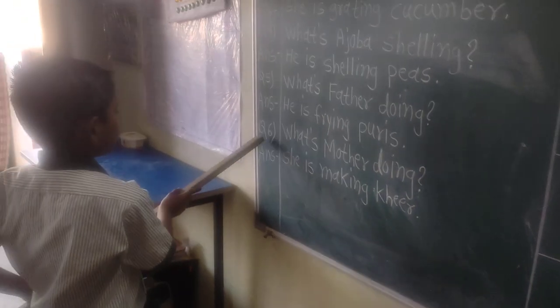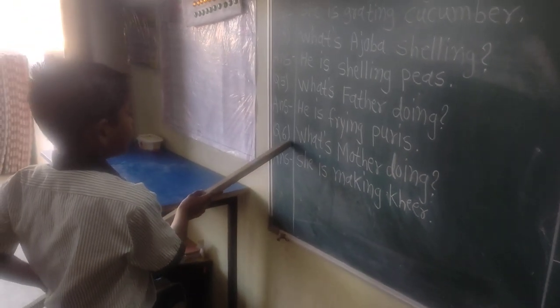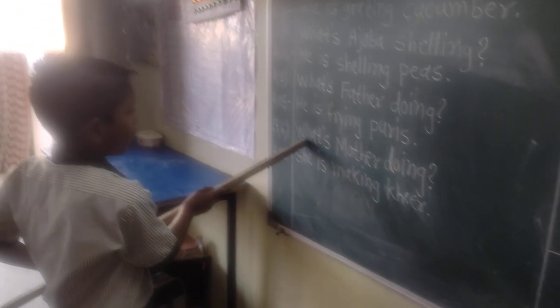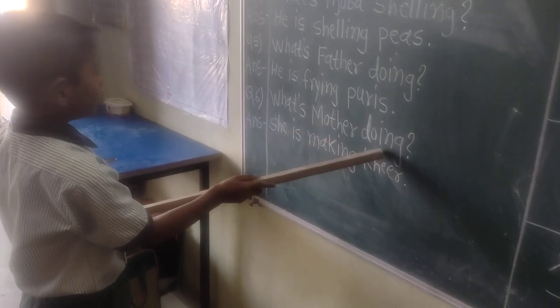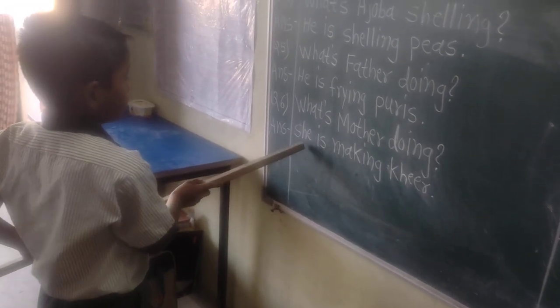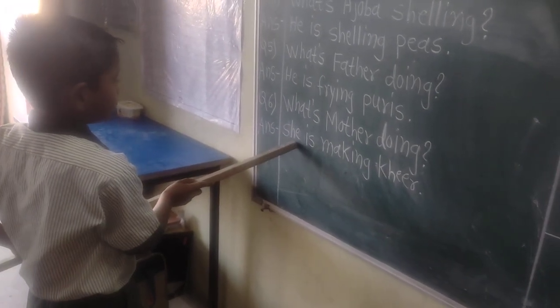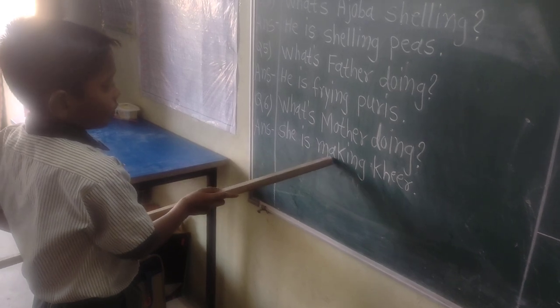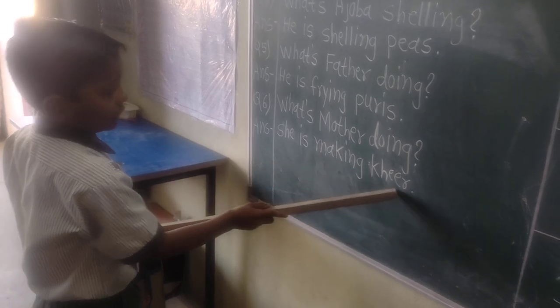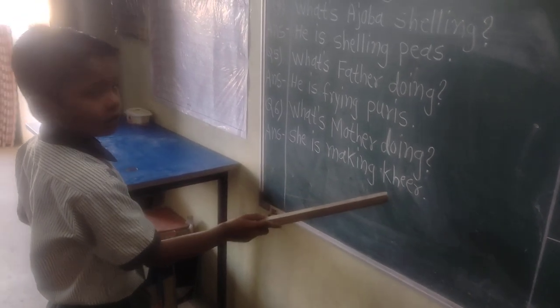Question 6. What's Anil doing? Answer. She is making kids.